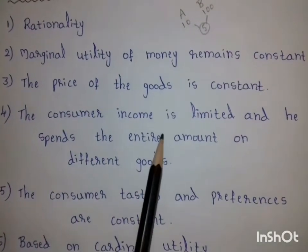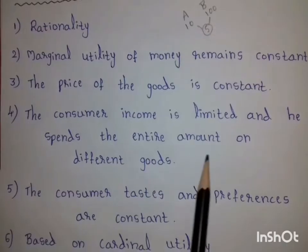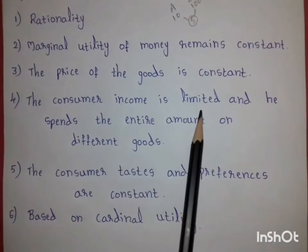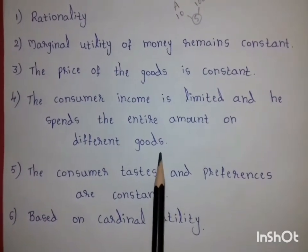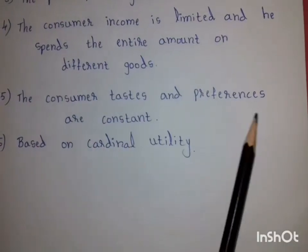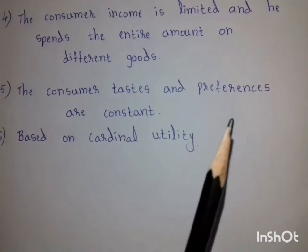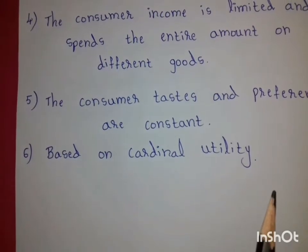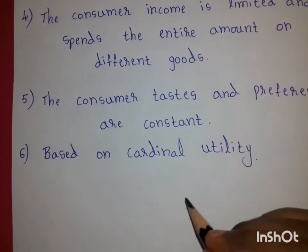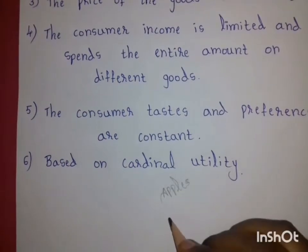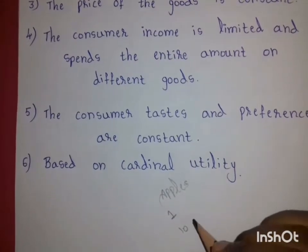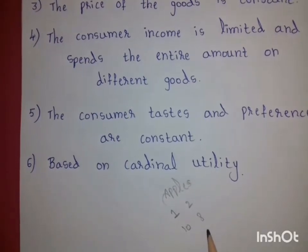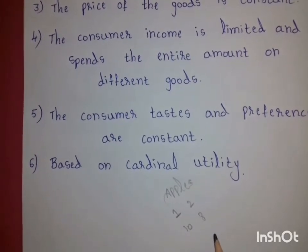Fourth, the consumer's income is limited and he spends the entire amount on different goods. Fifth, the consumer's tastes and preferences are constant. Sixth, based on cardinal utility — the satisfaction from goods must be measurable in cardinal numbers; for example, consuming the first apple gives 10 utils of satisfaction and the second apple gives 8 utils — utility must be measurable in this way for the law to be applicable.